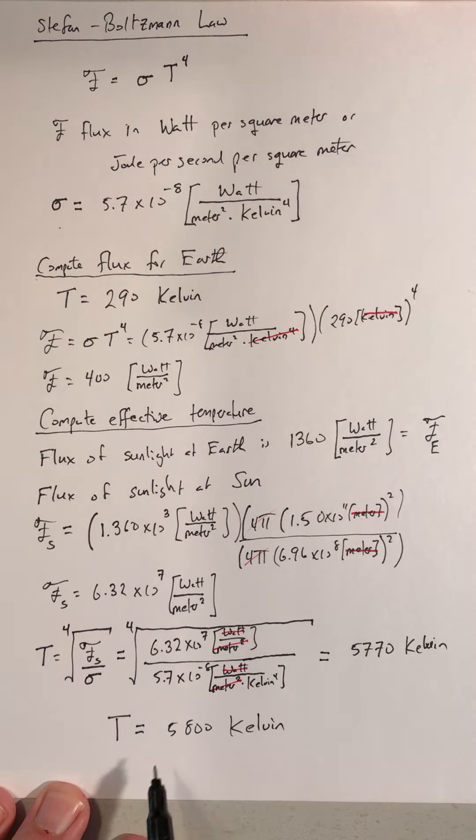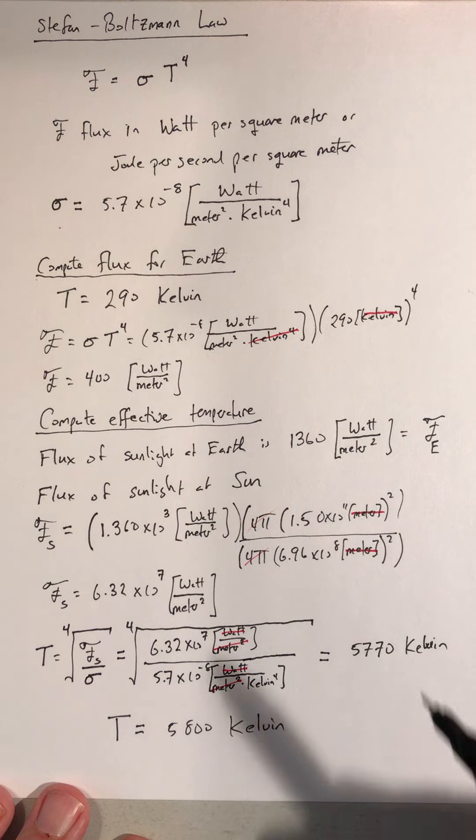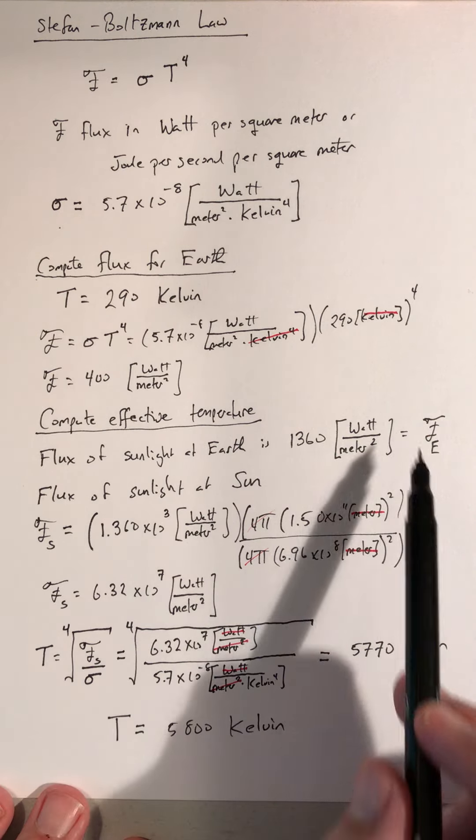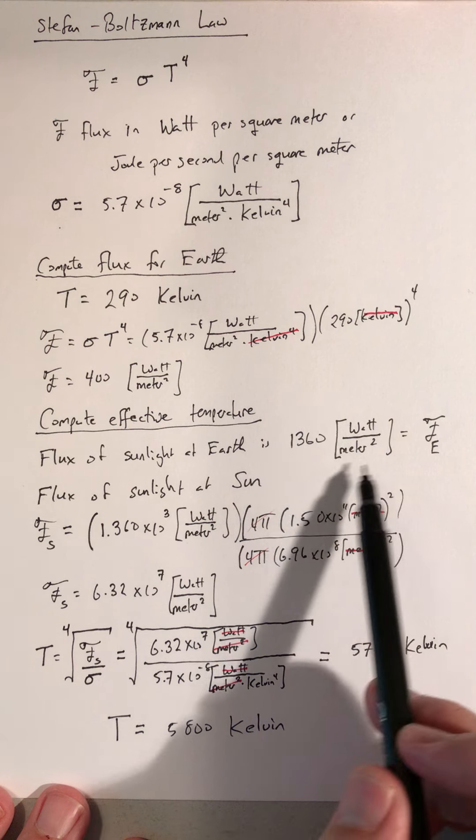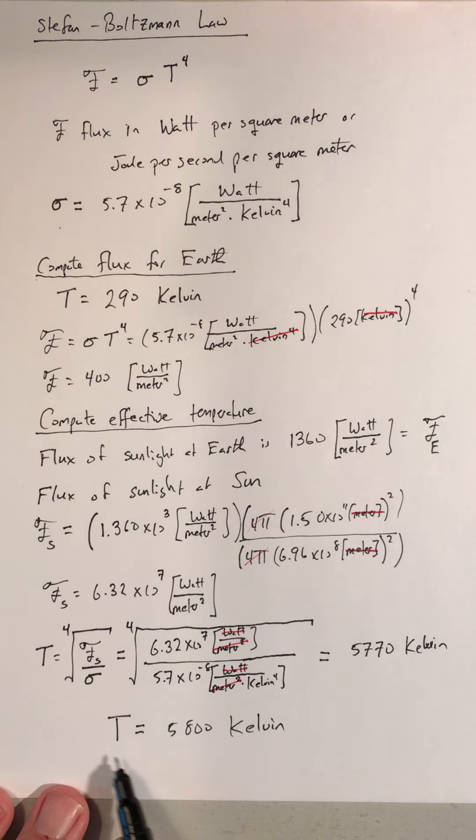Which, that's where the number in your textbook is coming from. It's coming from knowing the size of Earth's orbit, the size of the Sun in the same unit of measure, and measuring how much sunlight is reaching us here on Earth. That allows us to calculate the effective temperature for the photosphere of the Sun.